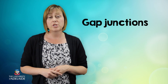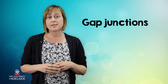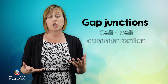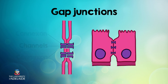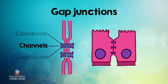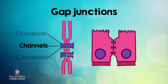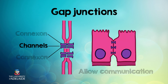Gap junctions are the third type of junction we're going to talk about today. These are found between adjacent cells and allow these cells to communicate effectively with one another. Proteins called connexins form small channels that allow ions and small molecules to move back and forth between the cells. These channels allow messages to pass between cells, allowing them to communicate and coordinate functions, like helping cilia of adjacent cells move together.